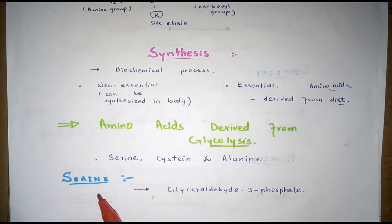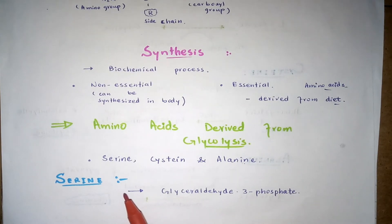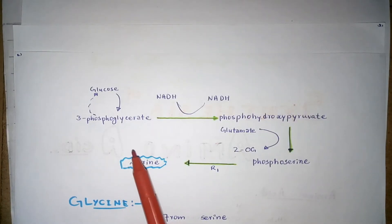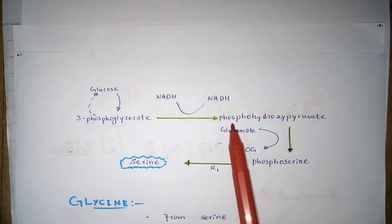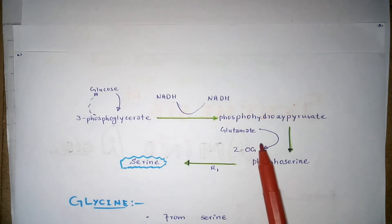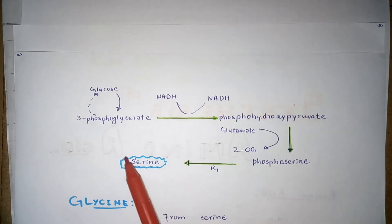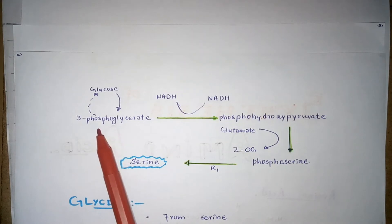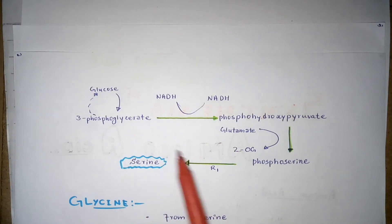Formation of serine: glyceraldehyde-3-phosphate, which is an intermediate of the glycolysis process, acts as a precursor molecule for the synthesis of serine. The 3-phosphoglycerate is oxidized to phosphohydroxypyruvate, then transaminated by glutamate into phosphoserine, which upon dephosphorylation yields serine. This is the reaction step by which the intermediate 3-phosphoglycerate is converted into serine.